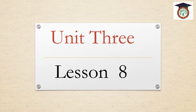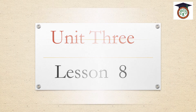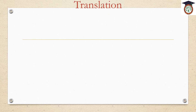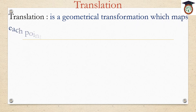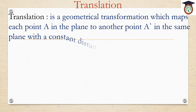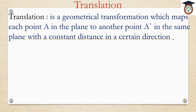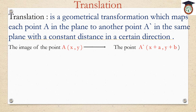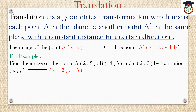The second lesson about geometric transformations: translation. Translation is a geometrical transformation which maps each point A in the plane to another point A dash in the same plane with a constant distance in a certain direction. The image of the point A (x, y) is A dash which is (x plus a, y plus b).